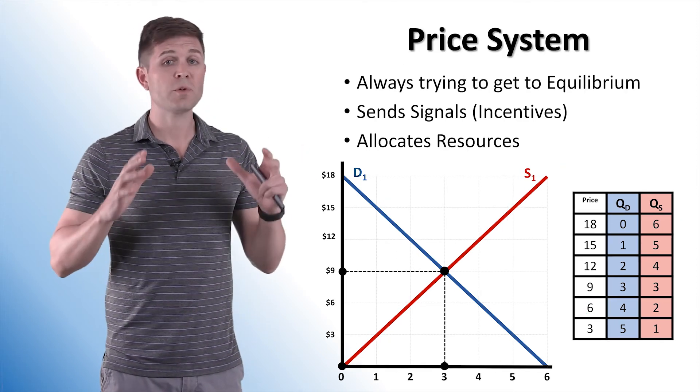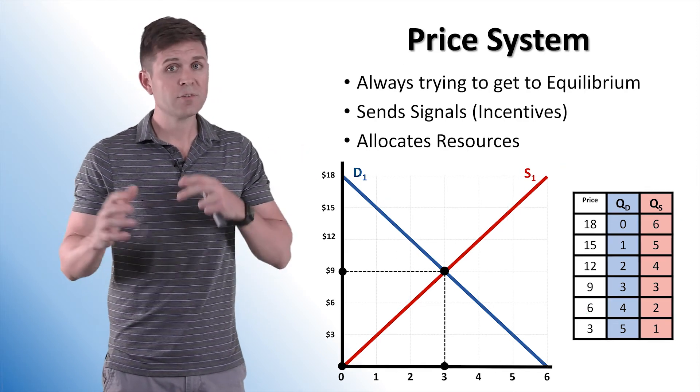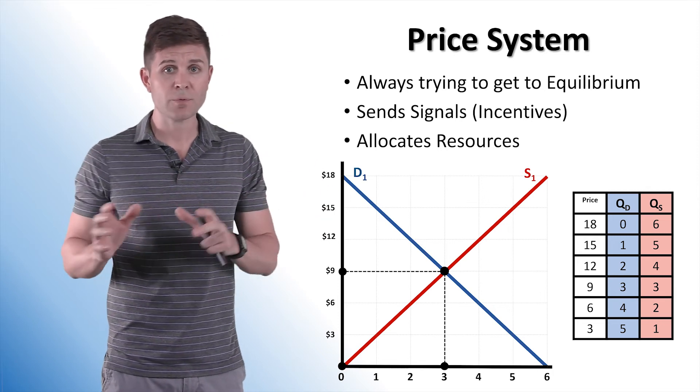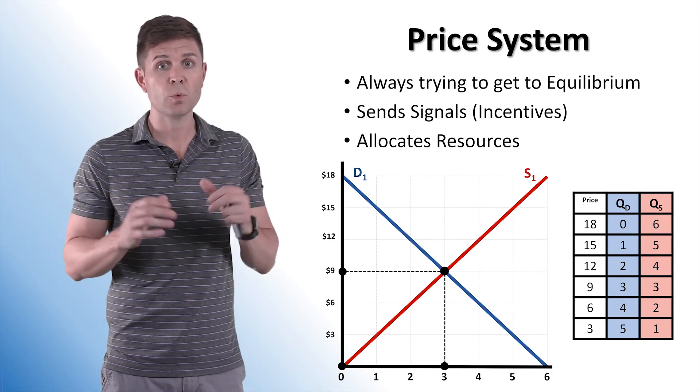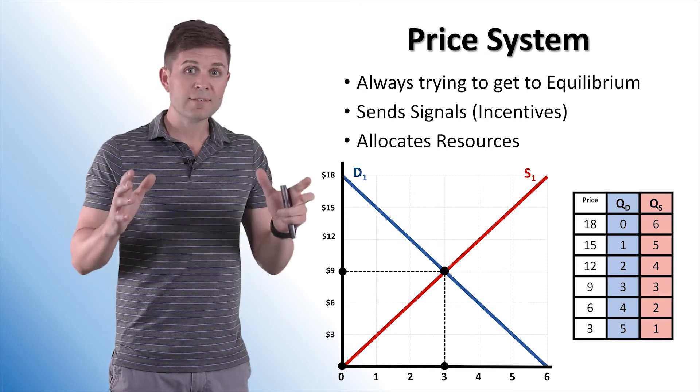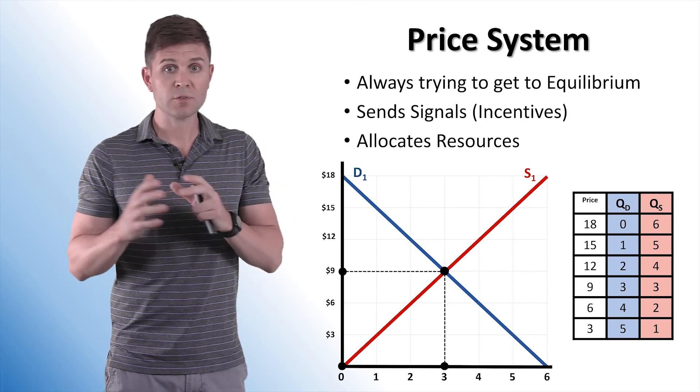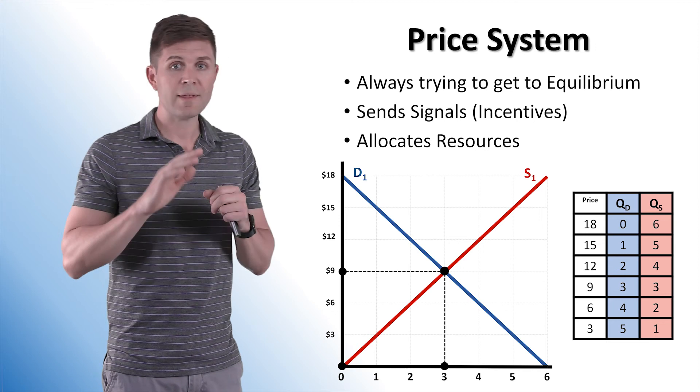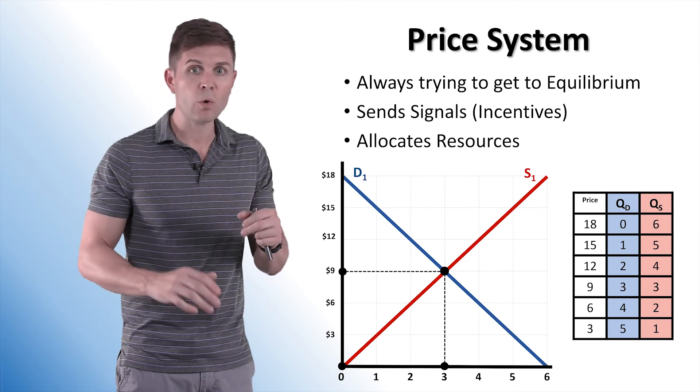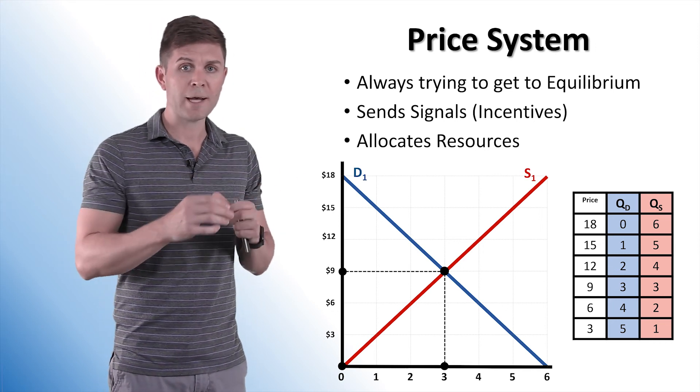Now, the price system is always trying to get back to equilibrium. And it's using that invisible hand to help guide resources and convince producers and consumers to do what it needs to do. It sends signals in the form of prices to consumers. If price is too high, they buy less. If price is too low, they buy more. And producers respond to this as well.